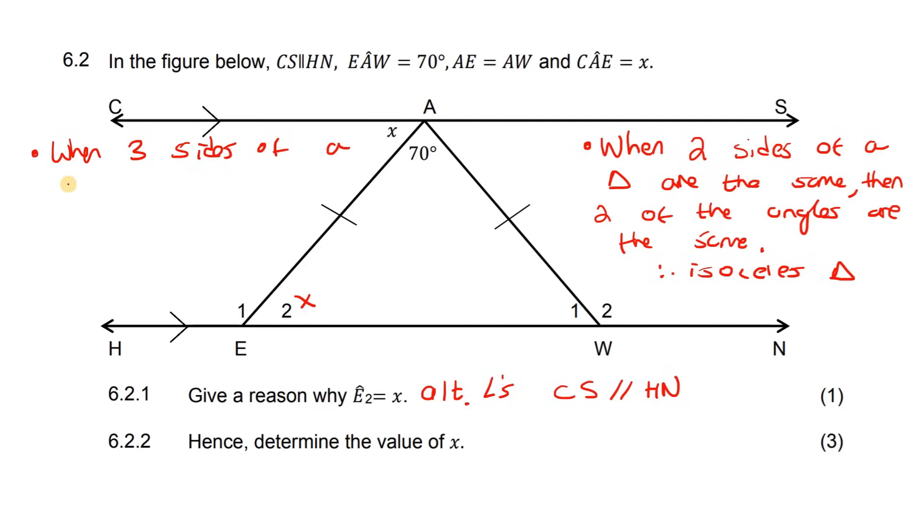Now, when three sides of a triangle are the same, then three of the angles are the same. That is called an equilateral triangle.